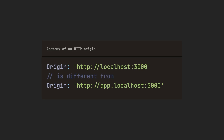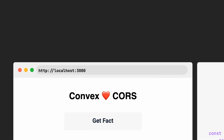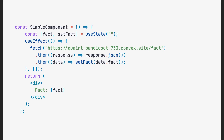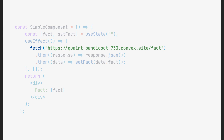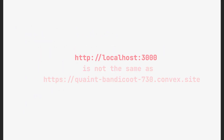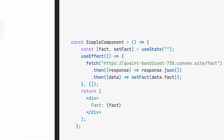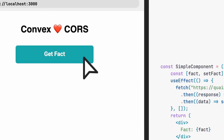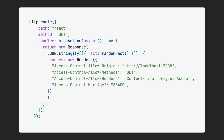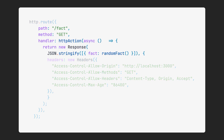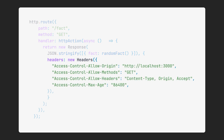Say my app is running on localhost — that's our origin. In my app, I make a fetch call to get a random fact from this URL. The server's origin is different. Astute observers may notice that localhost is not the same as quaint-bandicoot. Indeed, we are attempting to fetch a resource across origins, or cross-origin for short. One might even say we're hoping to share resources across origins — cross-origin resource sharing. For this to work, the server must explicitly allow it; it must opt in.